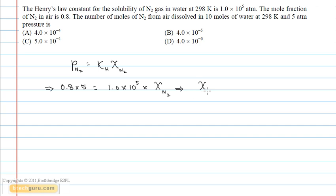Calculating the mole fraction of nitrogen from this equation, we get the mole fraction is equal to 4 into 10 to the power minus 5.